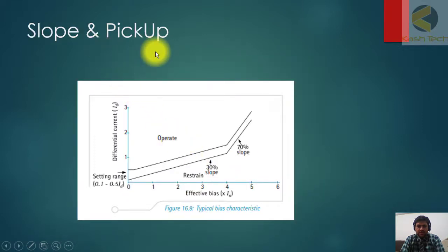For slope and pick-up, you can see this is the pick-up value starting from here. Then there is slope one which is 30 percent, and there is slope two which is 70 percent. For through faults at very high current, the slope will be high. In order to cover the CT saturation, the slope is increased at higher values of current.